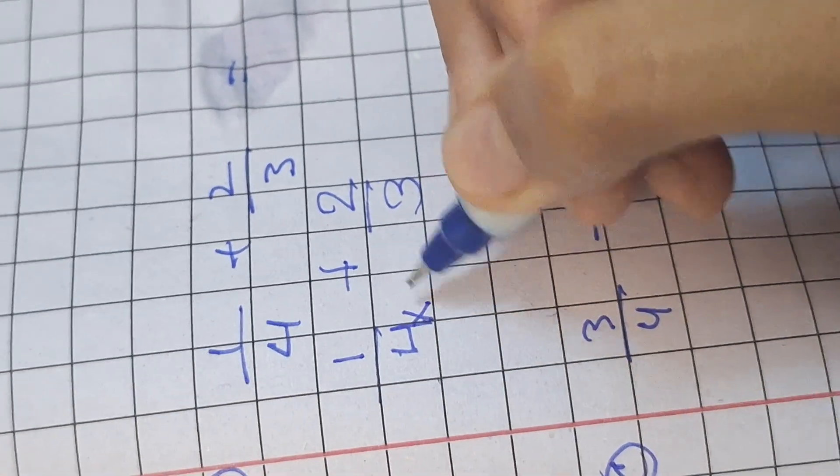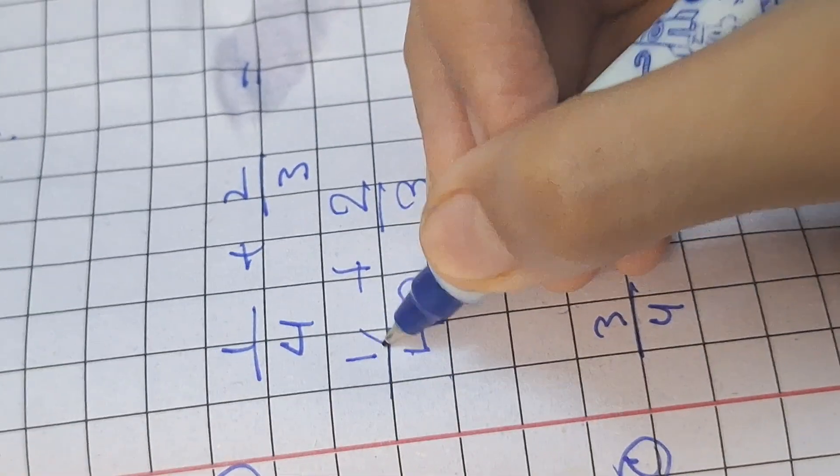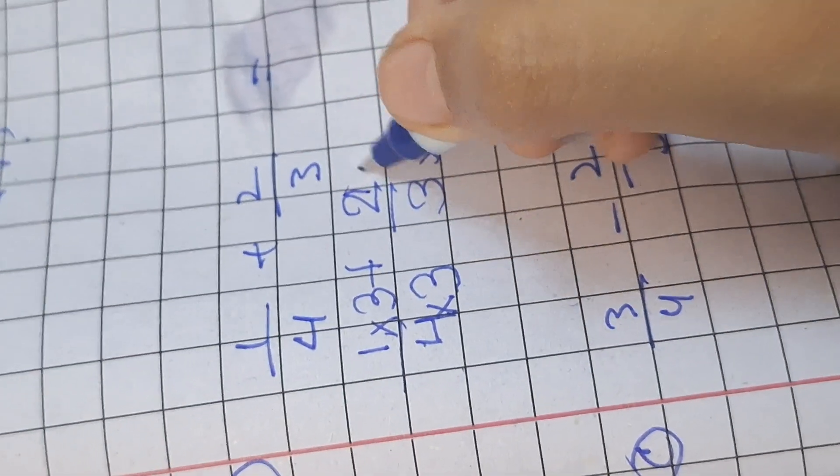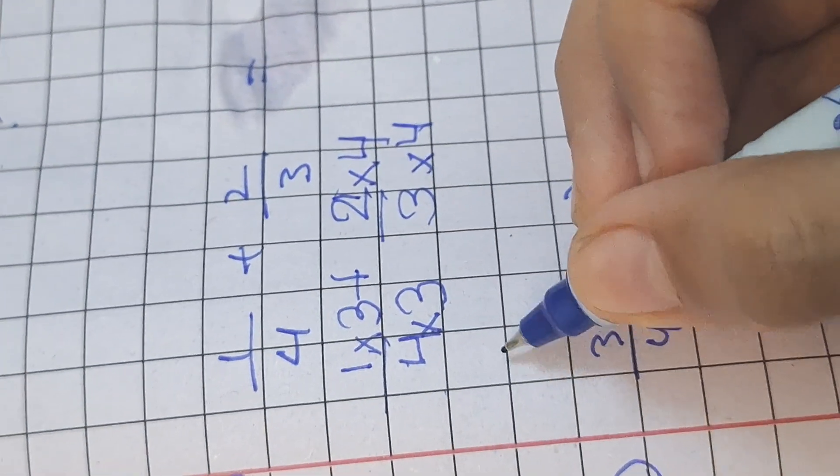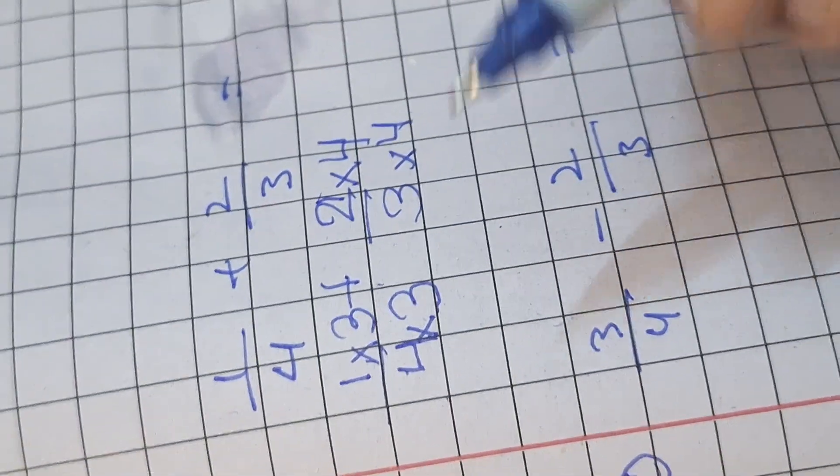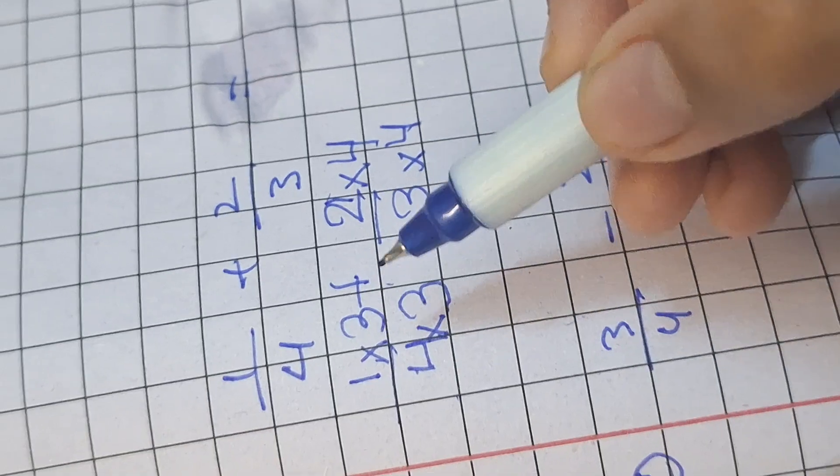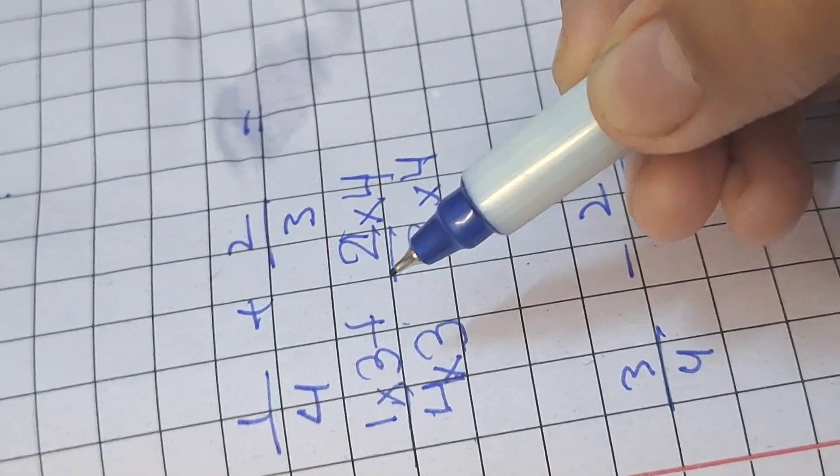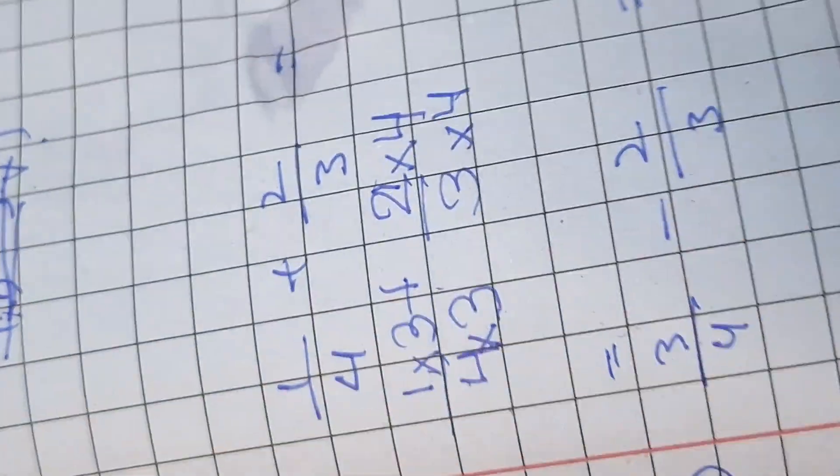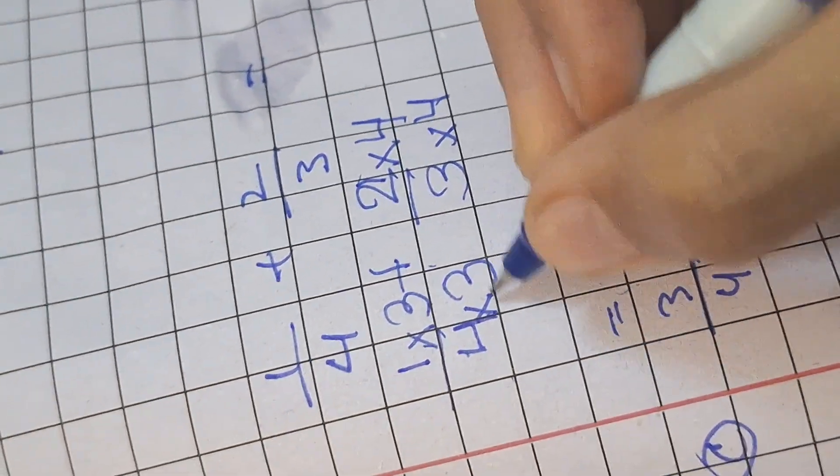In the addition it's the same: 4 times 3, 3 times 4. So until now everything just the same as subtraction. Actually we have to plus the answers, we have to plus them. So now 1 times 3 is 3.